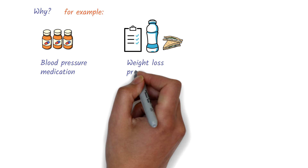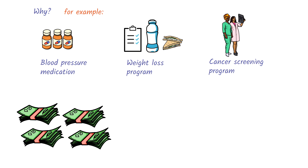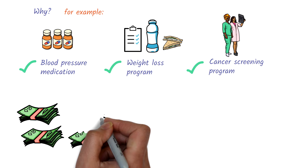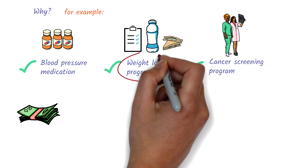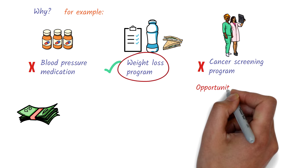There are many effective and worthwhile health interventions, or programs, that can be used to improve the health of a population. If we had a lot of money to spend, we could use it for every beneficial health program. The reality, however, is that we usually don't. If we spend all the money we have on one intervention, then we don't have any left for others. This is called an opportunity cost.